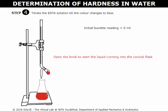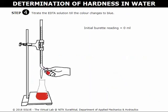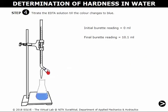Click here to open the knob and let the solution flow into the conical flask. Stop the process when the color changes to blue. Note down the final burette reading.